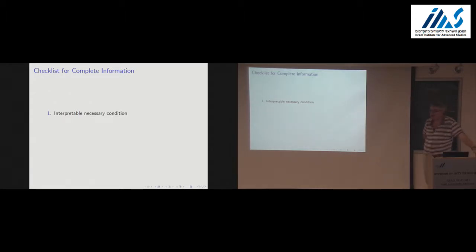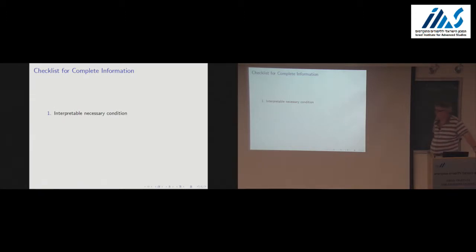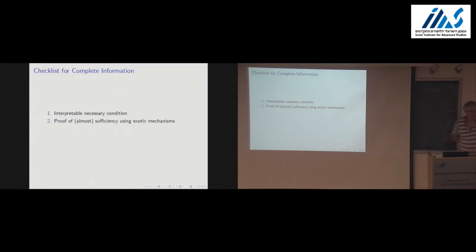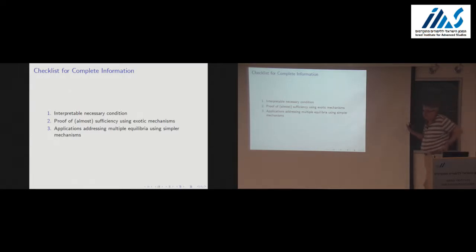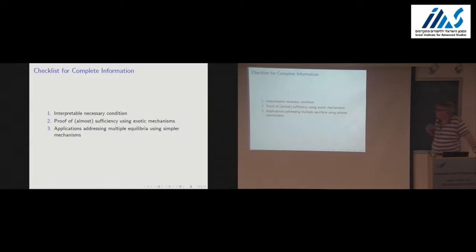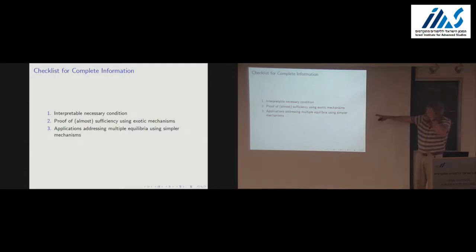Let's do a little checklist of how we're doing with our full implementation results. We get a necessary condition for implementation which is interpretable, and a proof of sufficiency using somewhat exotic mechanisms. As Eric emphasized, it's good to know the limits of what can be done. Full implementation in practice will express itself when we look at an application and rule out multiple equilibria. There are a number of applications that do answer this question.